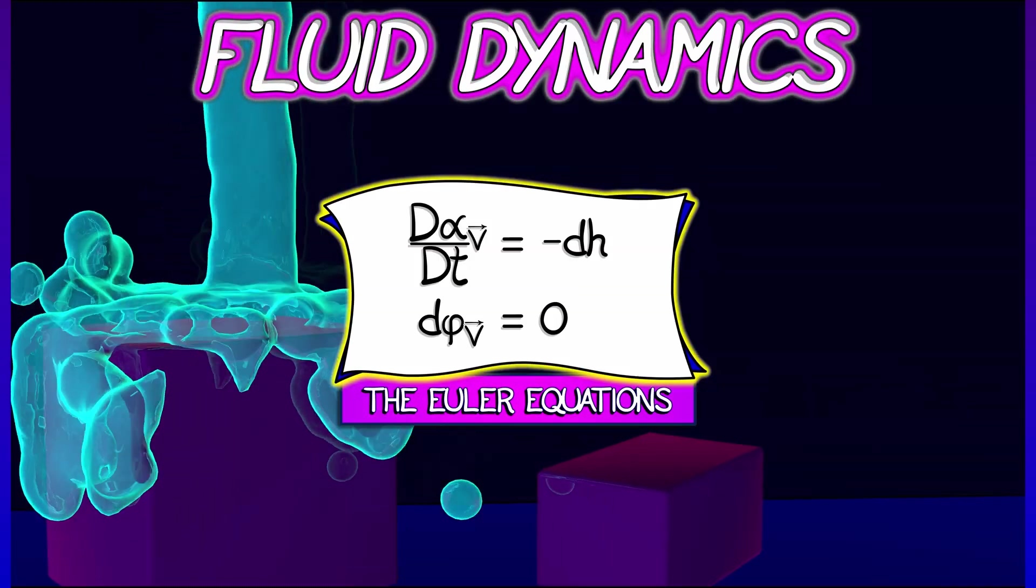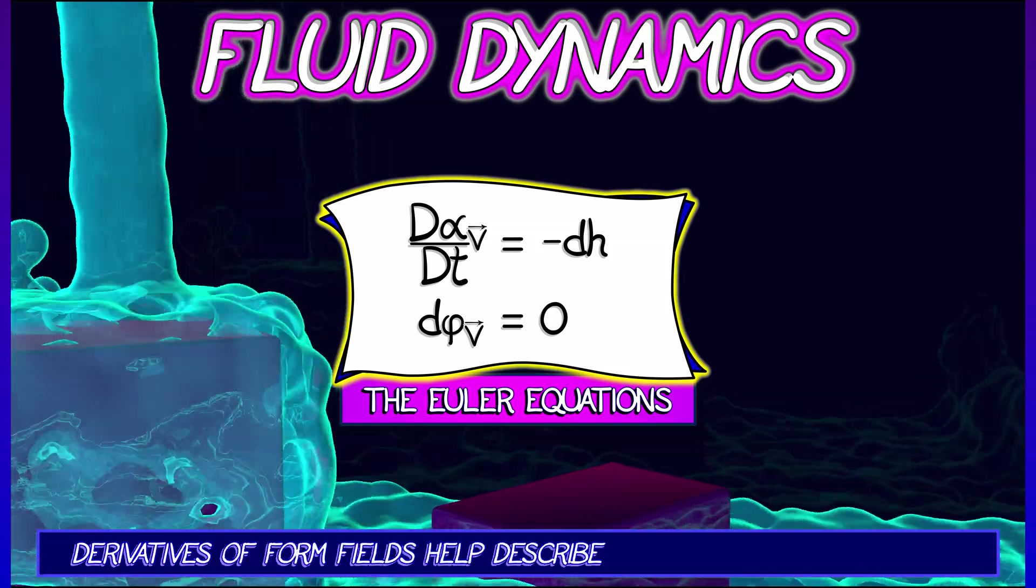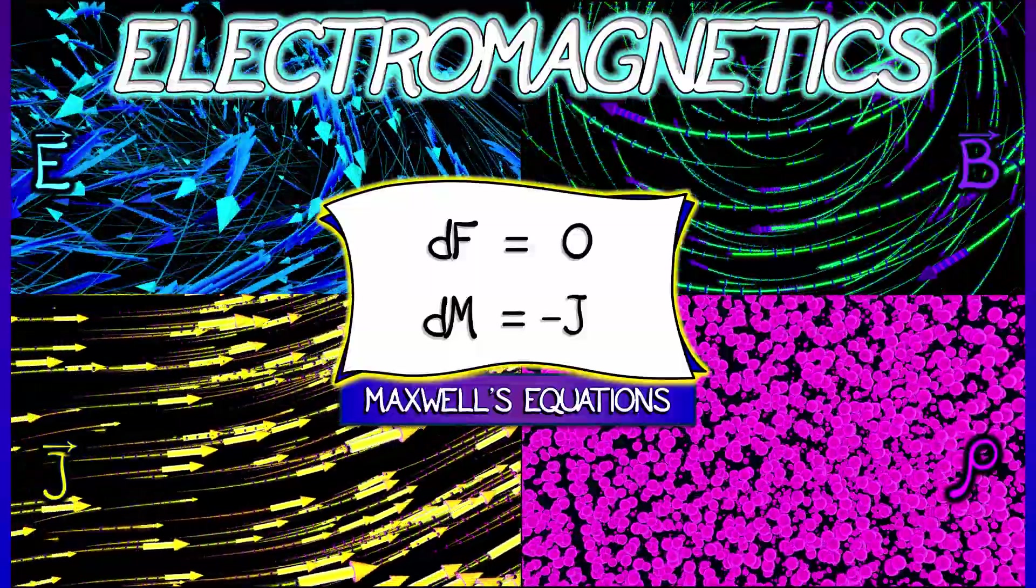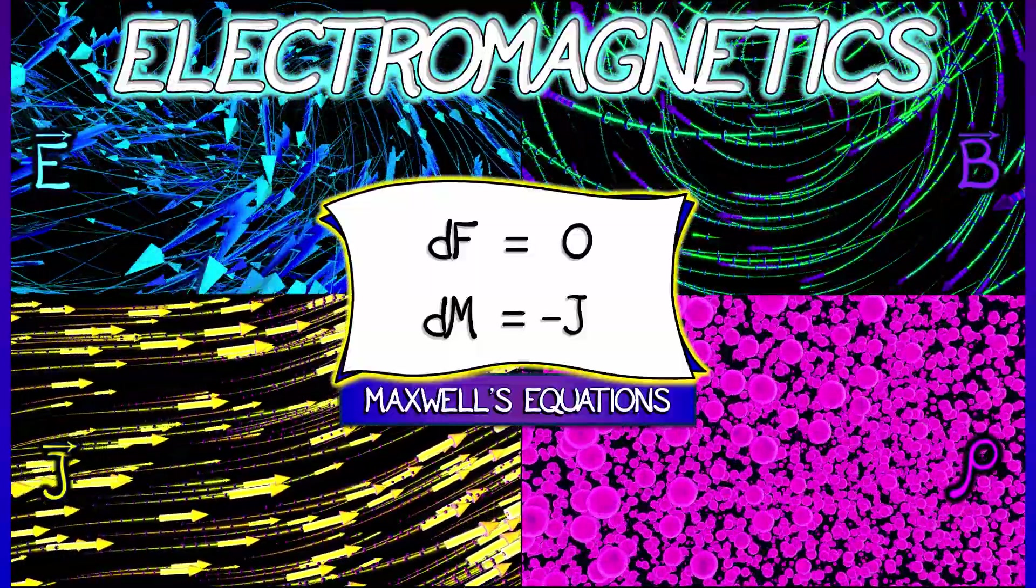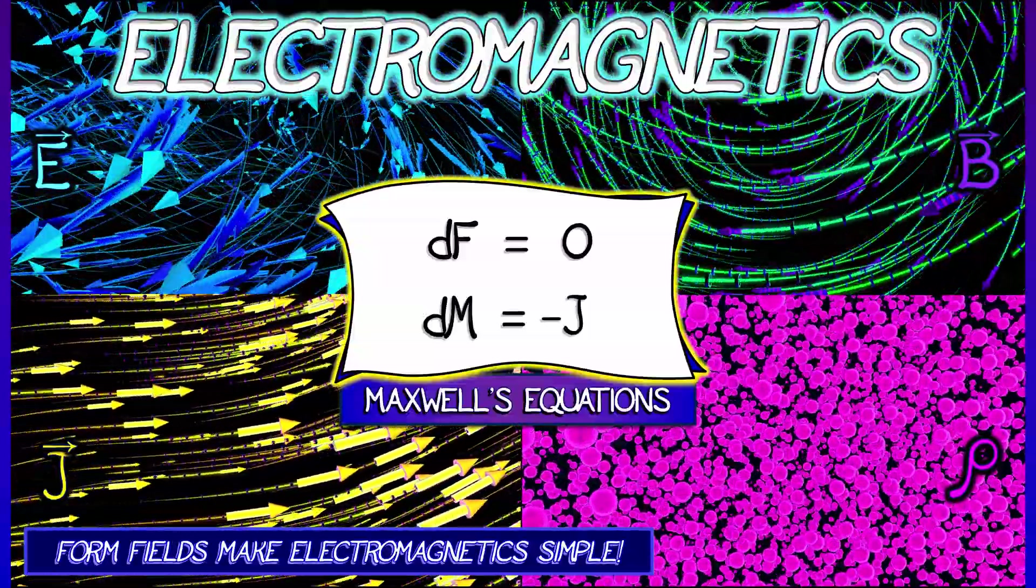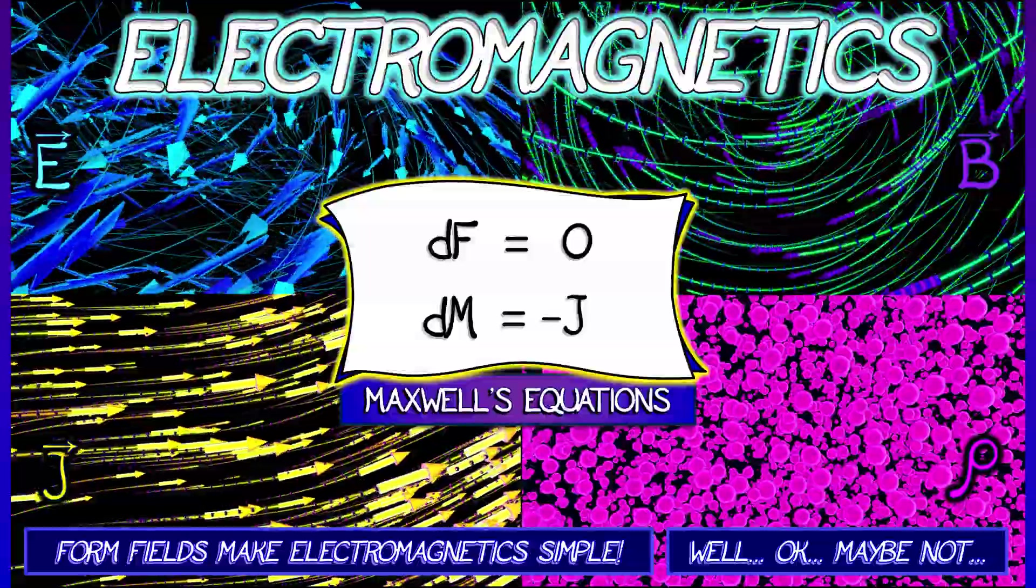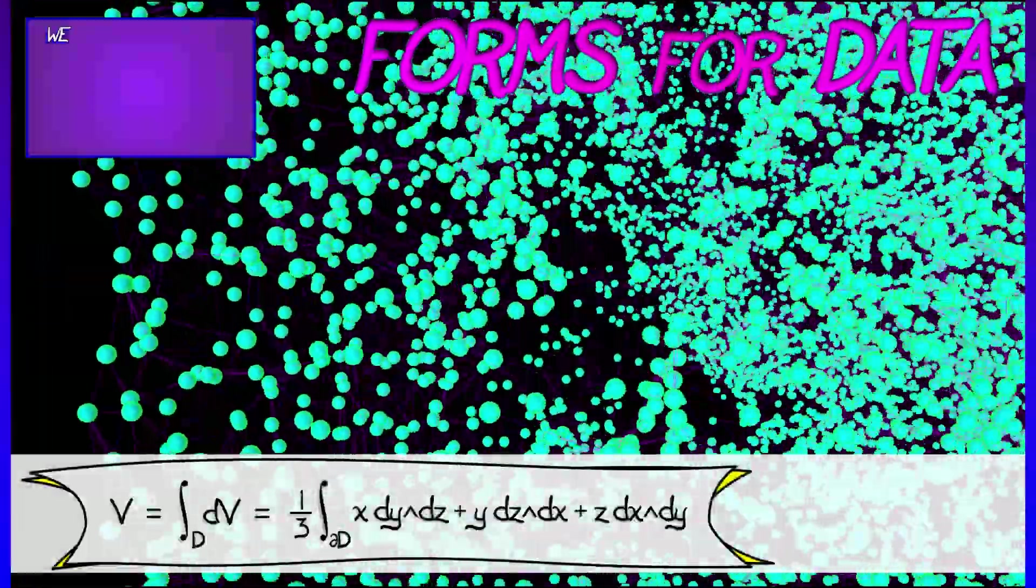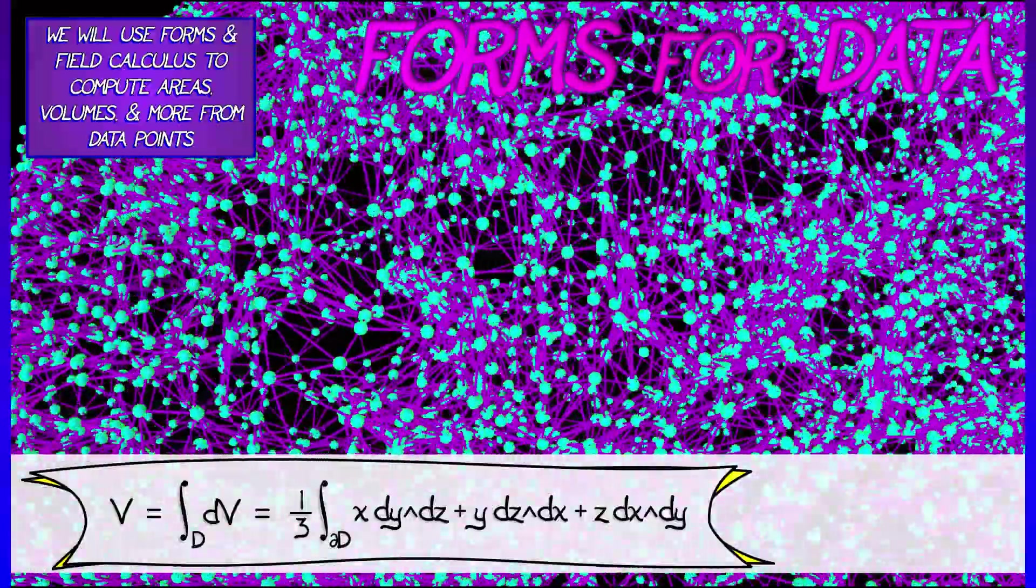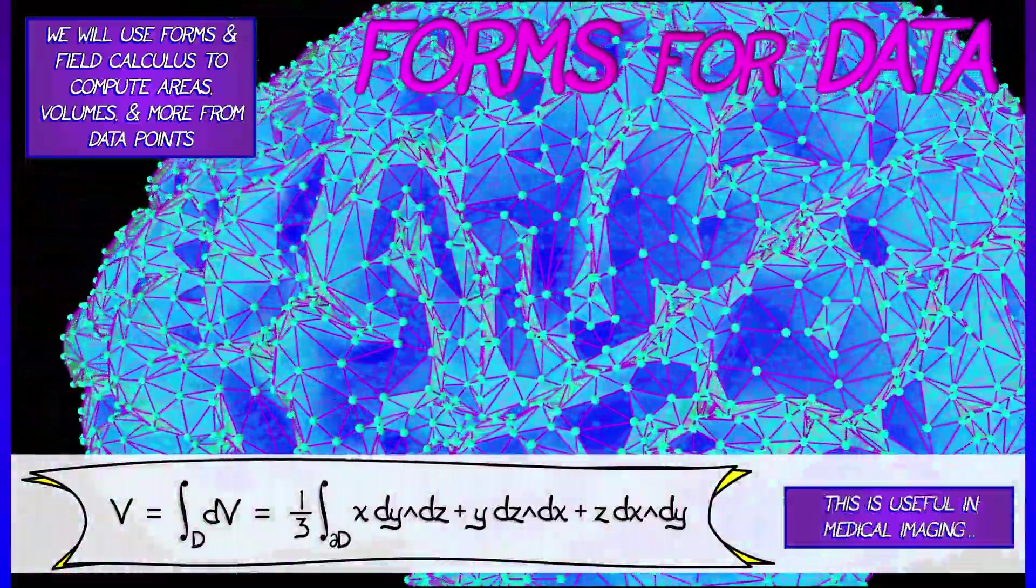We're going to take a look at fluid dynamics and use derivatives of form fields to describe the motion of ideal fluids. Form fields are going to make all of electromagnetics incredibly elegant and simple. Totally simple. No, not really. I'm kind of lying. But it's going to be pretty cool. We're going to see uses of forms in data science, computing geometry based on data points. And this is pretty useful in things like medical imaging.